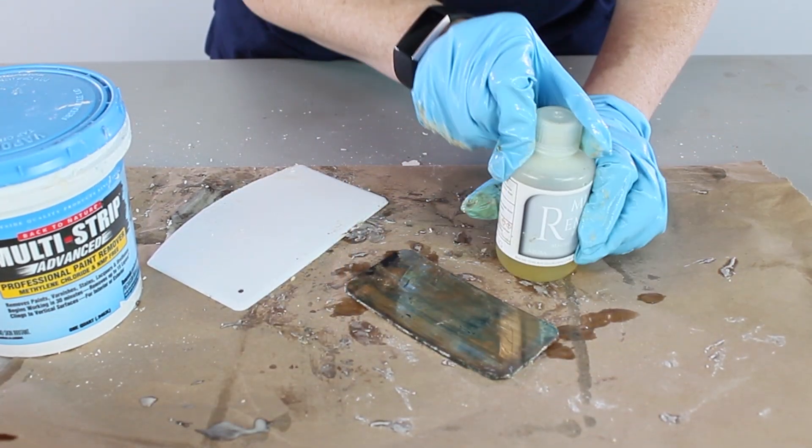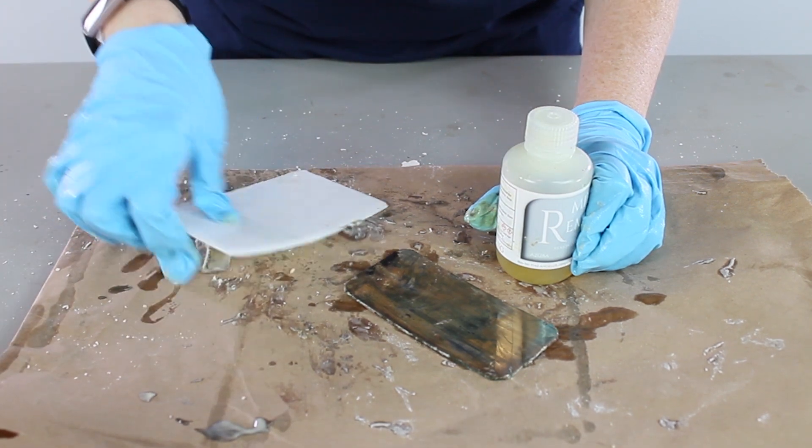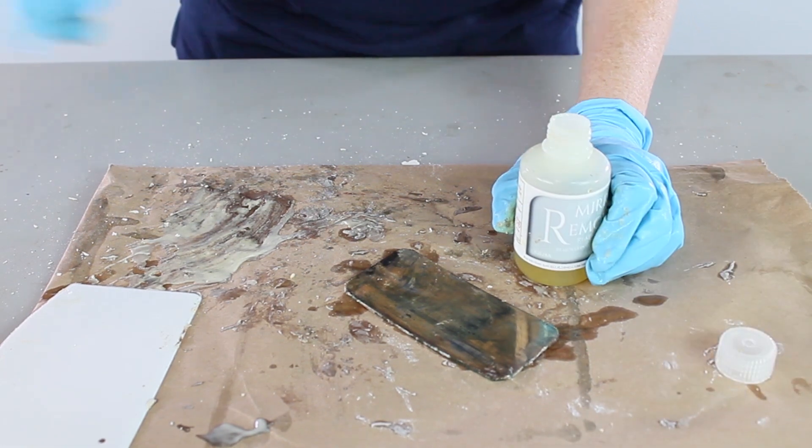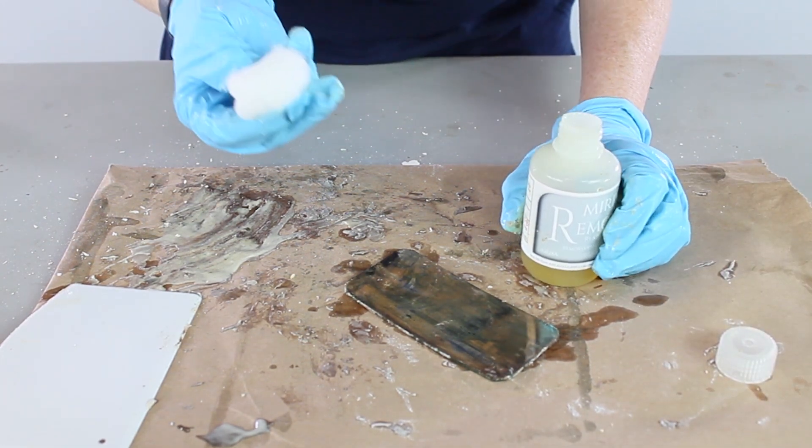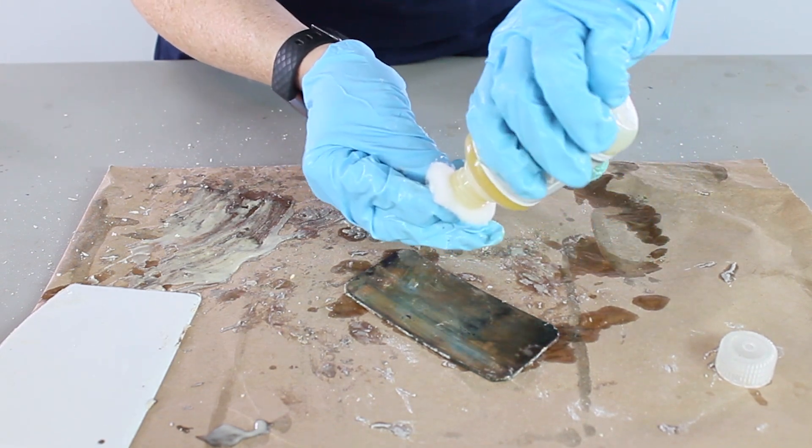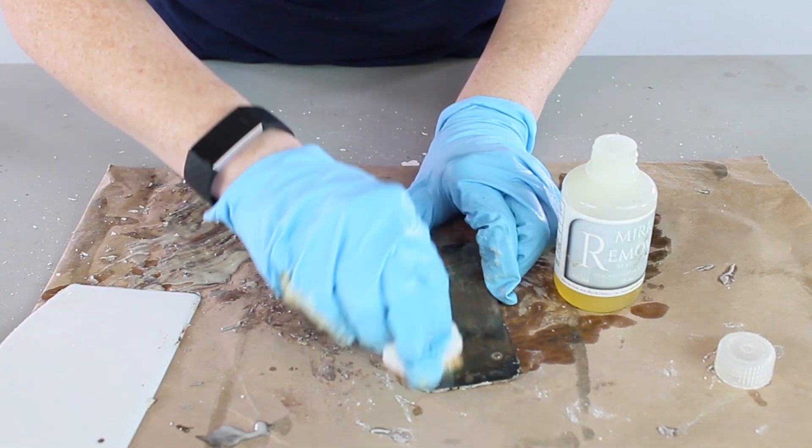Now moving on to the mirror remover. Mirror remover is a multi-purpose remover and this is going to remove both the copper and the silver layer at the same time. Just using a regular cotton swab, dipping that in the mirror remover and then gently wiping that over the surface of the glass.